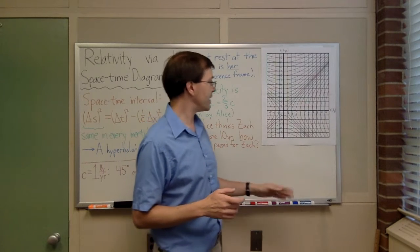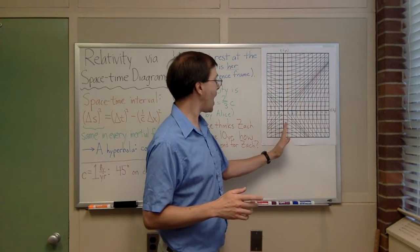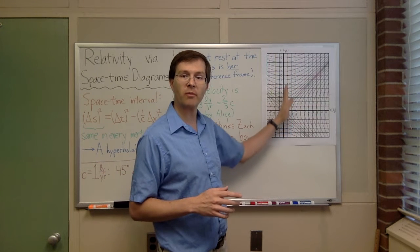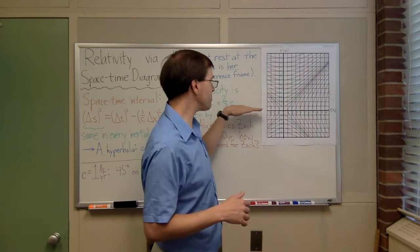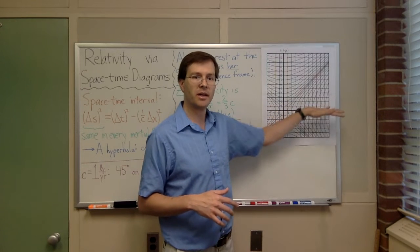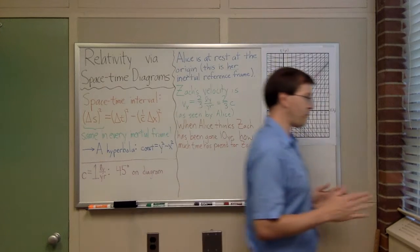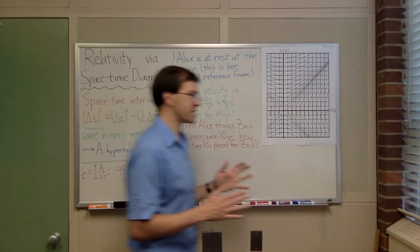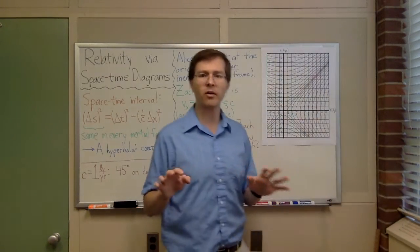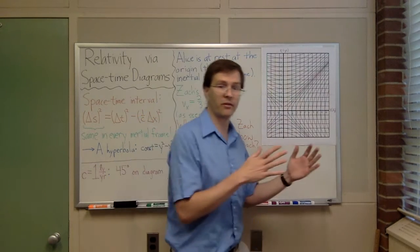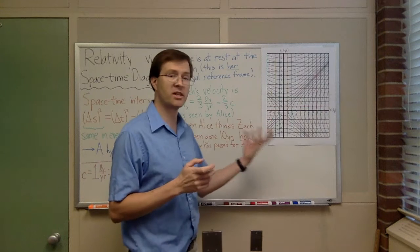The key aspects are that there are two axes: time vertically on the diagram, going up on the diagram goes to later times, and space horizontally on the diagram. These diagrams are representing motion in just one dimension of space, forward and backward, along a single line. So these diagrams won't have anything where you're turning corners and going in circles. They may have someone going back and forth, but it's going to be one-dimensional motion that it captures.